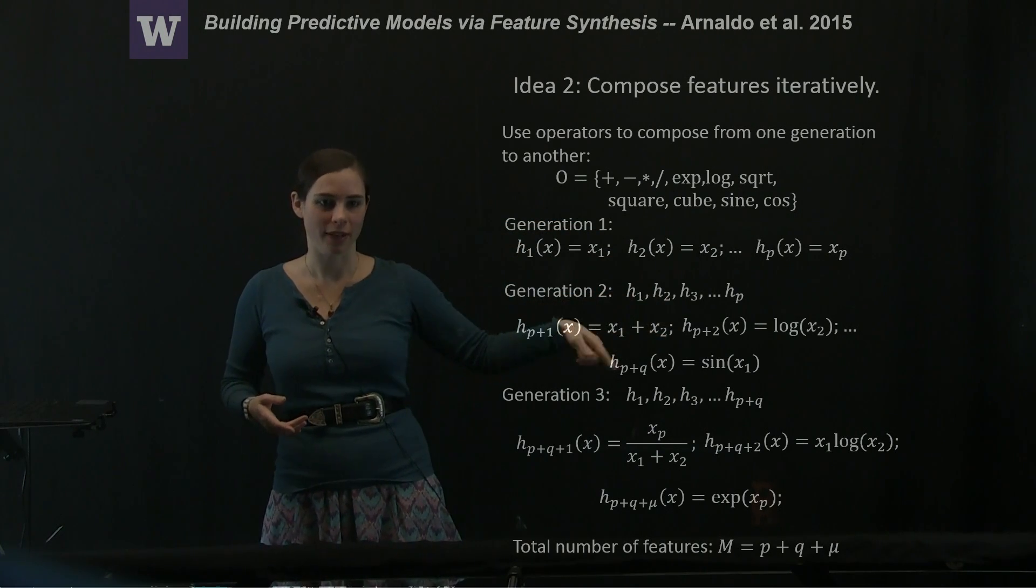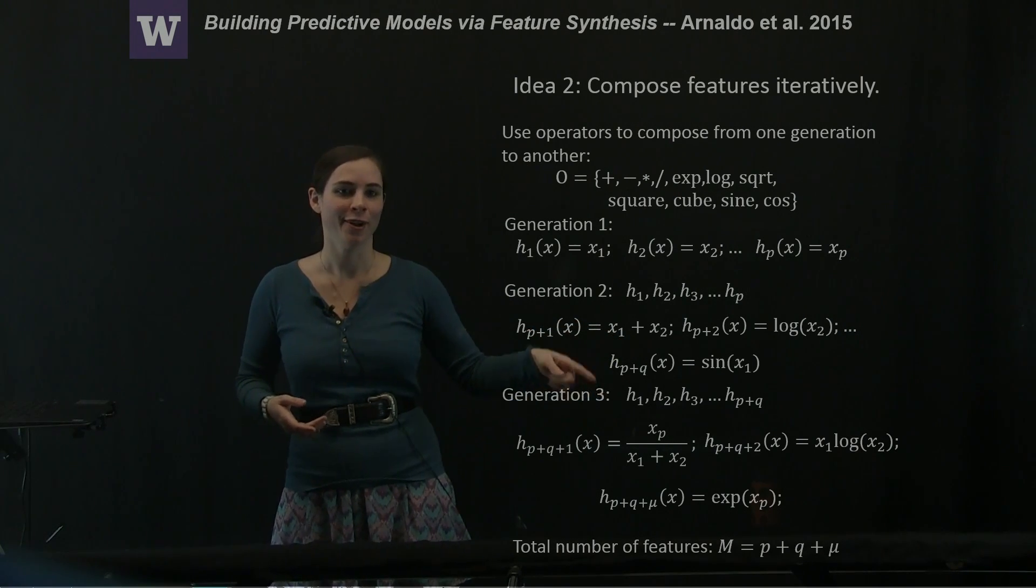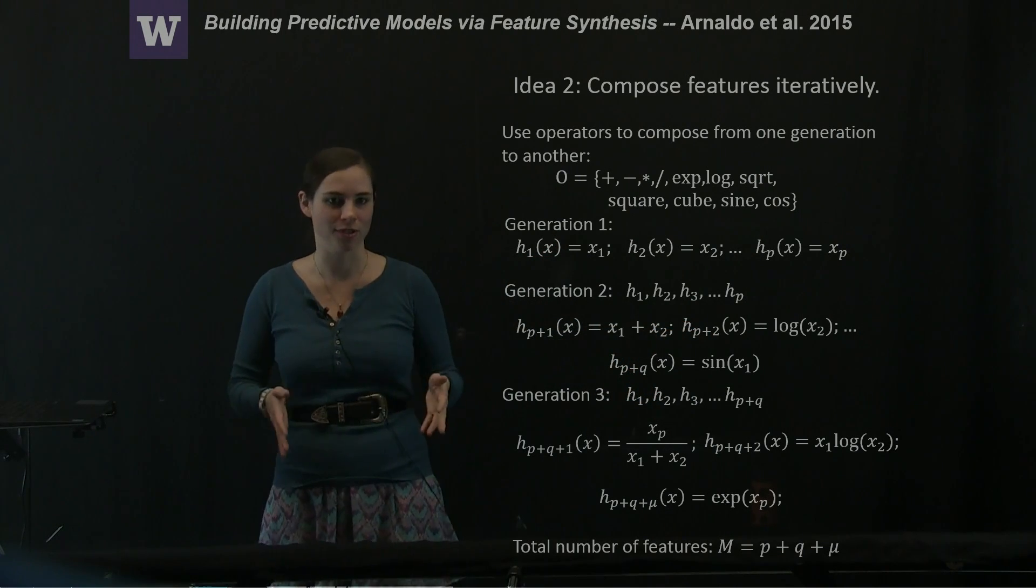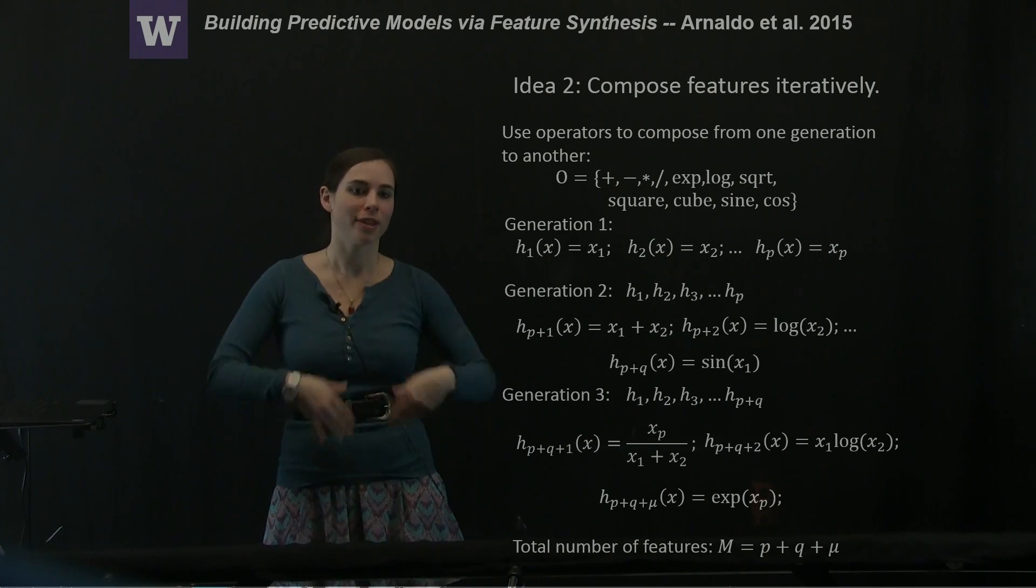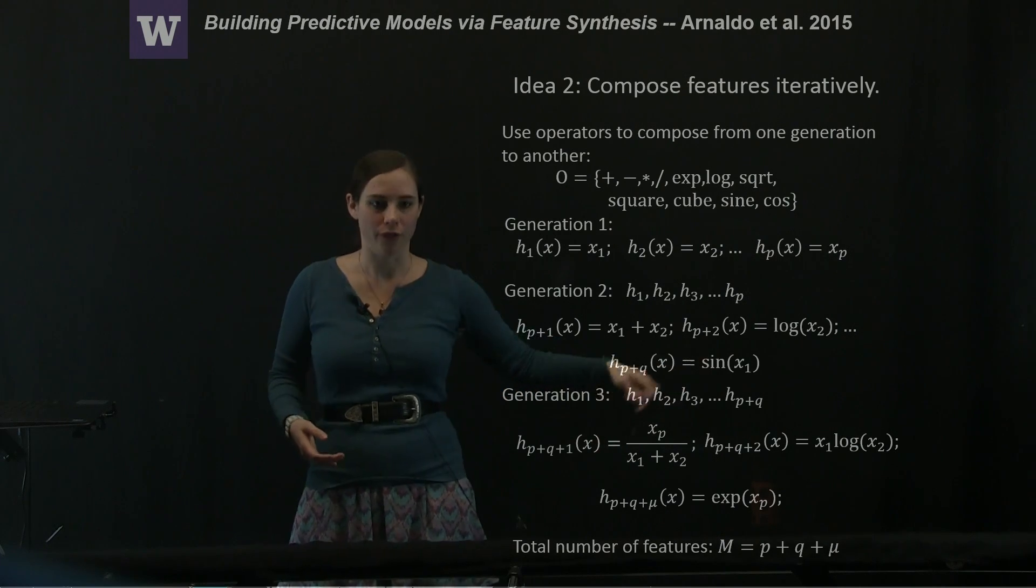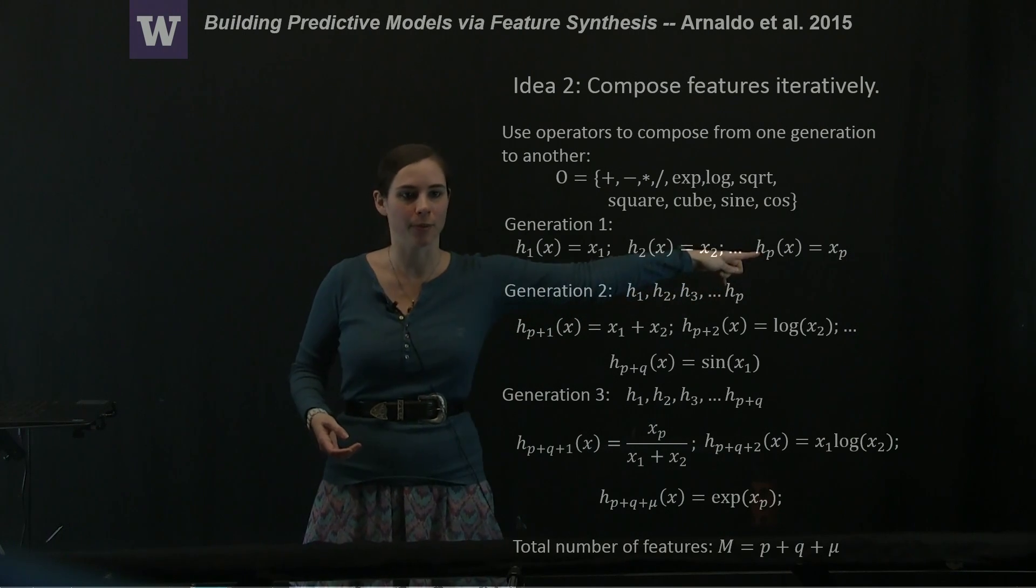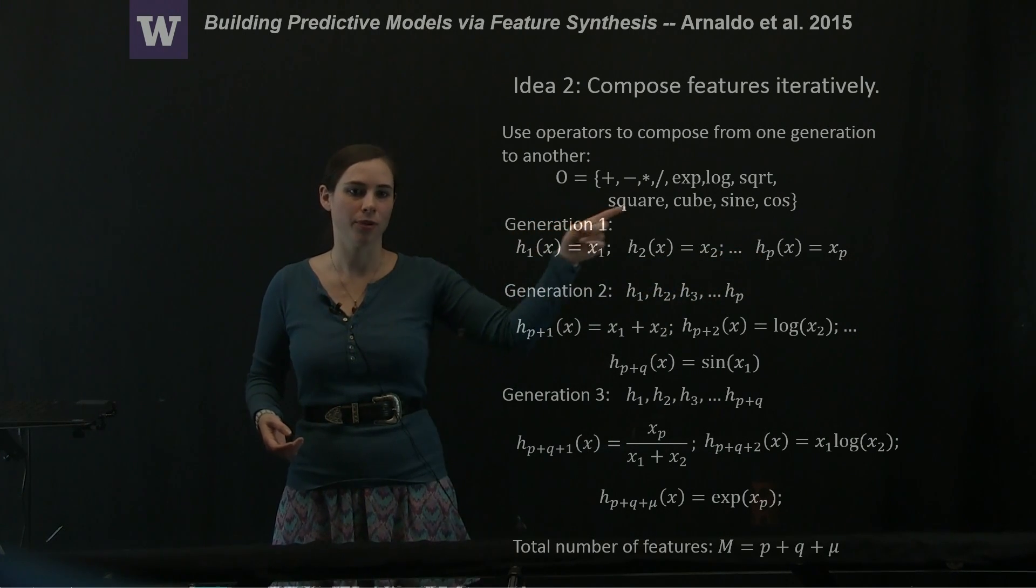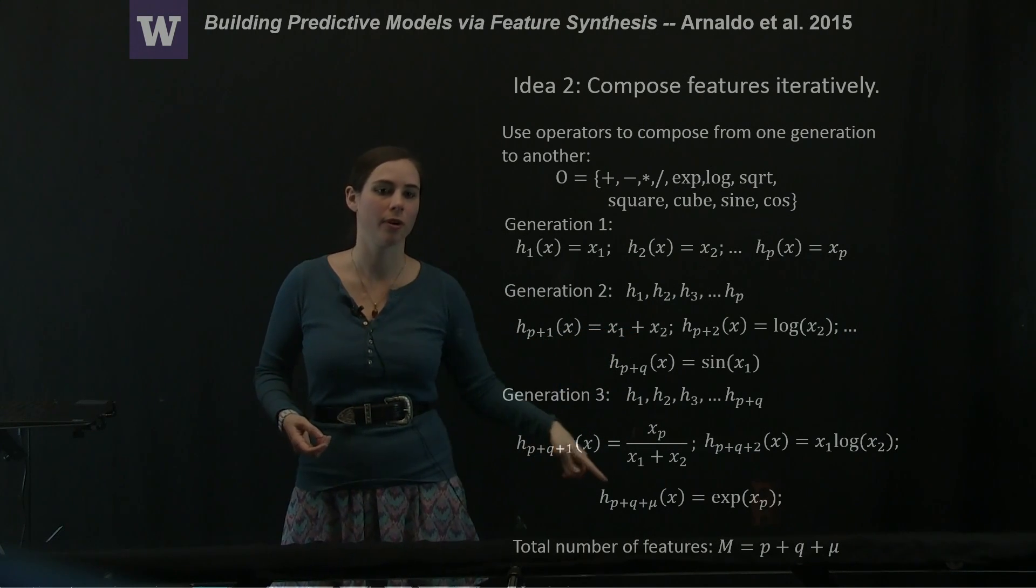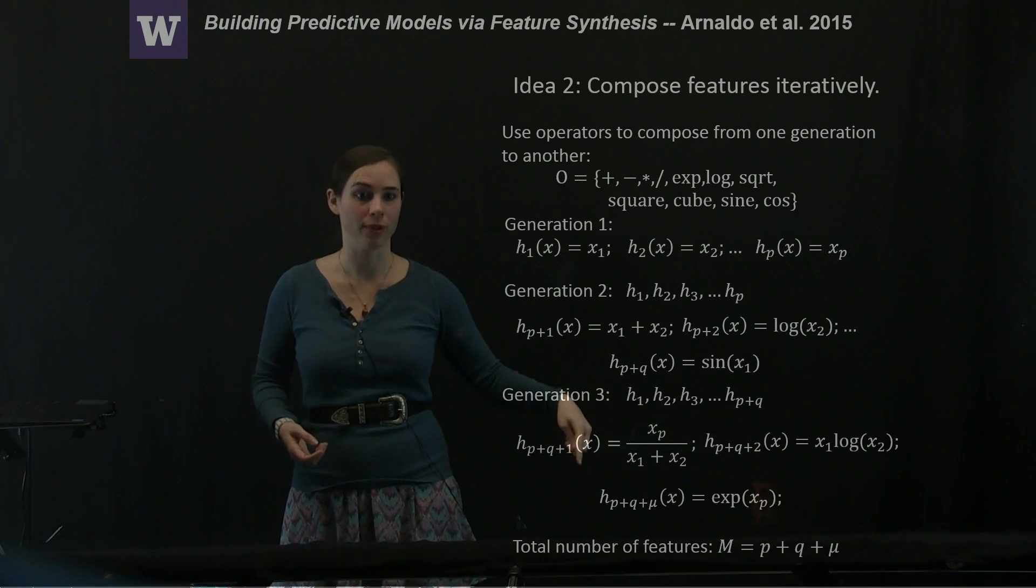And these new set of features that you've gotten from your generation two. So generation three is now going to be those original features, plus all of the features that survived whatever evaluation you're doing from generation two, plus some new composition using these operators on all of those remaining features. For example, you might take xp from your first generation and compose it with the divide operator with this x1 plus x2, or the hp plus one term feature from your generation two to get this generation three feature.